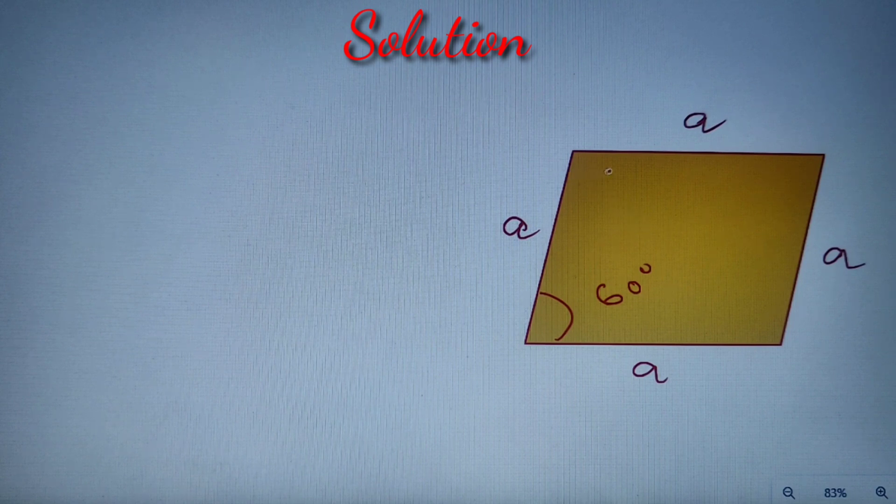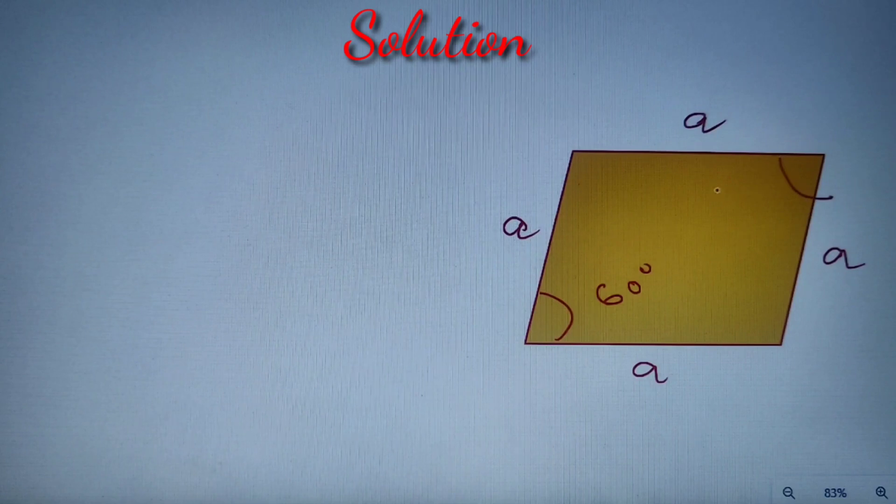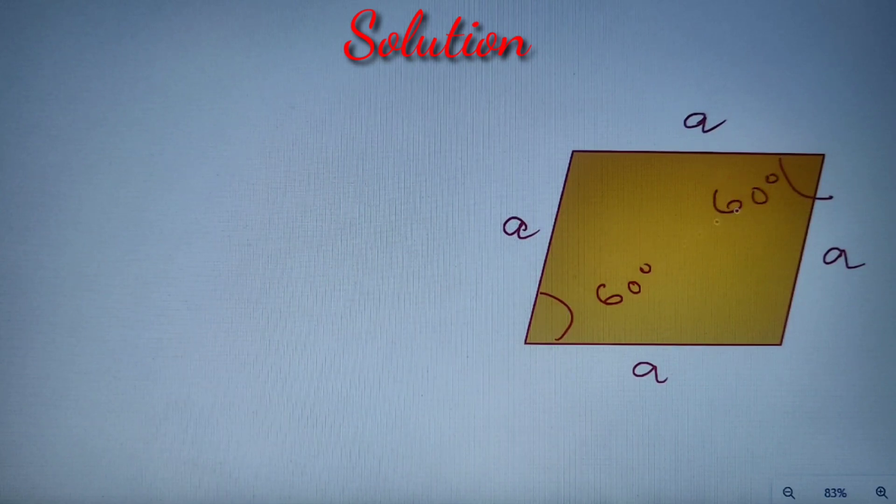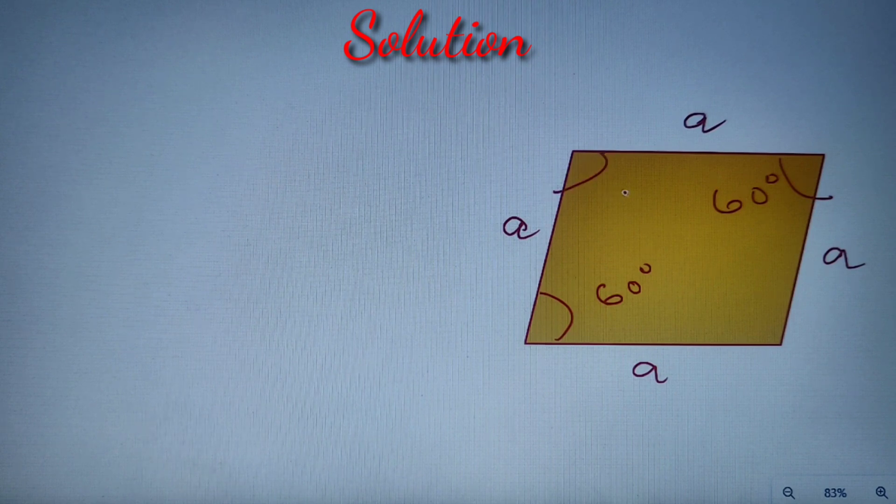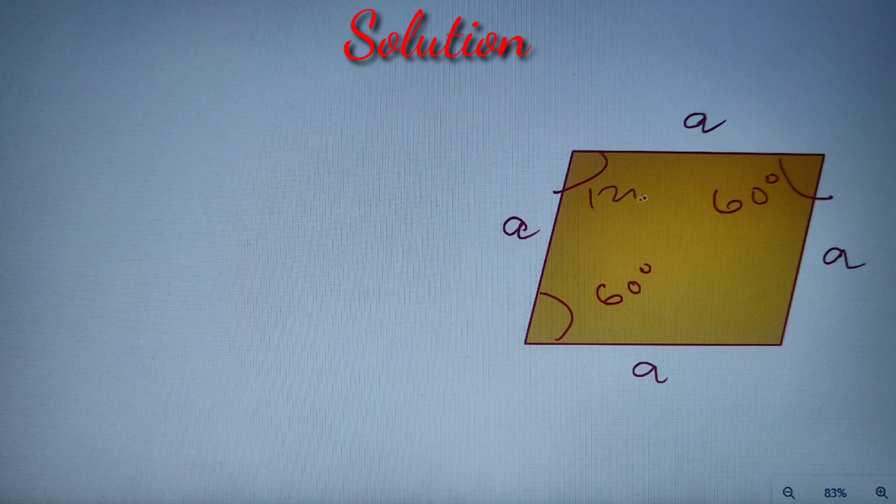We are given that this angle is equal to 60 degrees and we have to find the ratio of the shorter diagonal to that of the longer diagonal. Now if this angle is equal to 60 degrees, this angle is also equal to 60 degrees because opposite angles of a parallelogram are equal, and adjacent angles are supplementary. So this angle is equal to 180 minus 60, that is equal to 120 degrees.